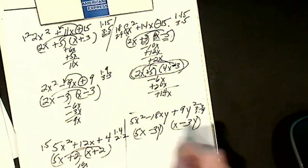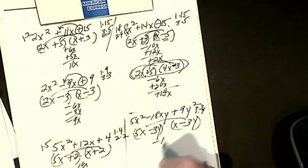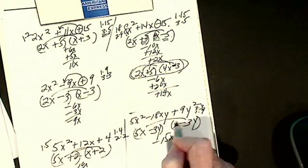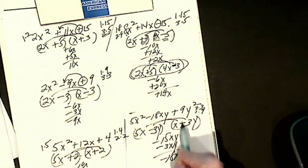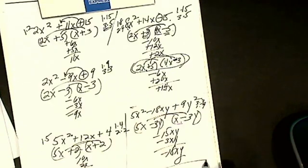I check my outers. I get minus 15xy. I check my inners. I get minus 3xy. I get minus 18xy. Then I'll check my last. Plus 9y squared. Everything's good.